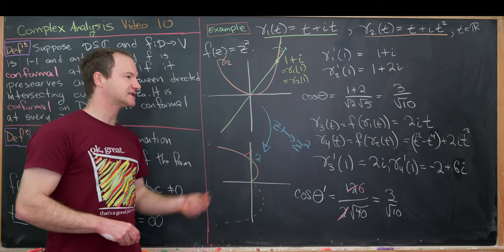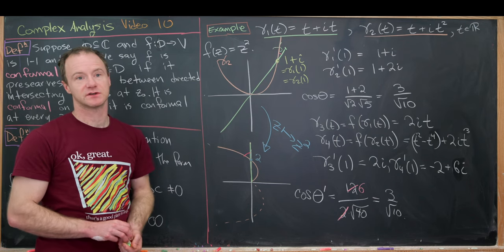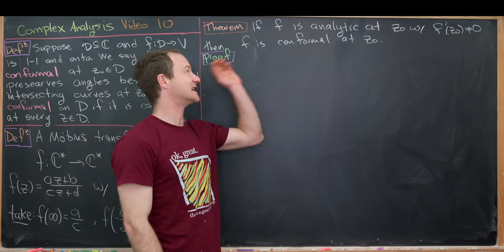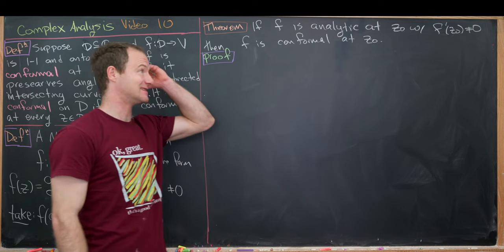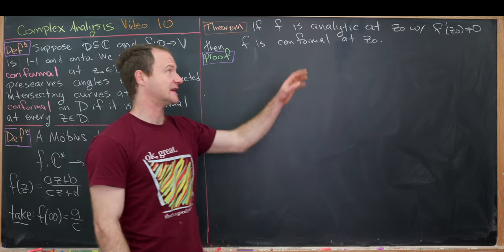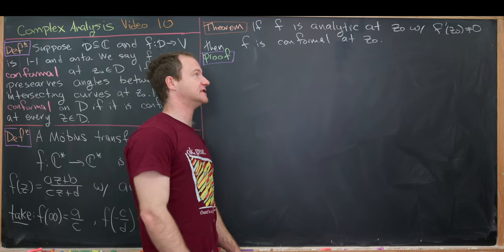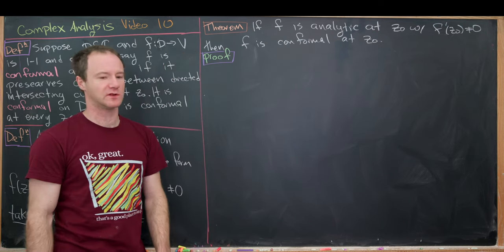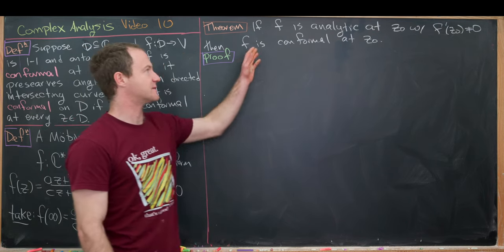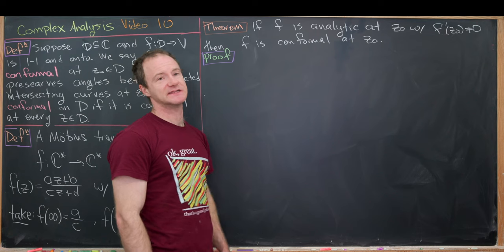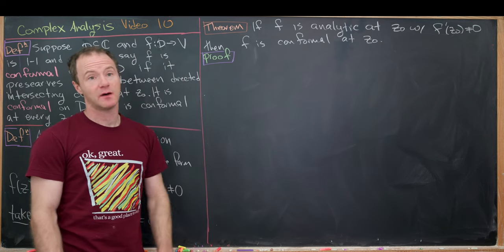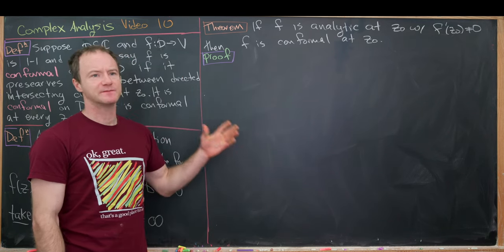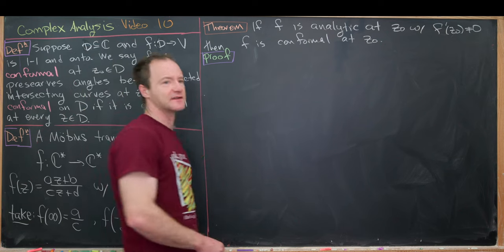Now we're ready for a nice general result. If f is analytic at z₀ and f'(z₀) ≠ 0, then f is conformal at z₀. Recall that being analytic at z₀ meant that we were complex differentiable at z₀.